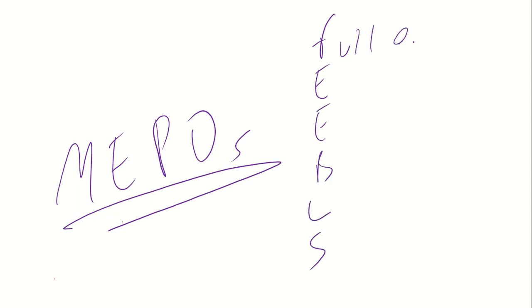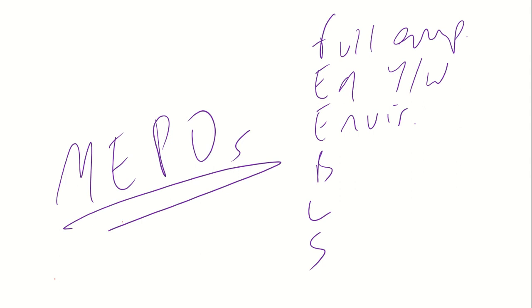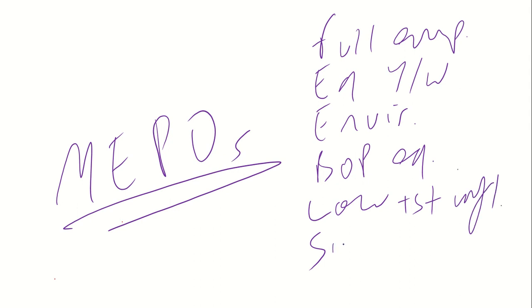We've got FEEBLES as an acronym: Full employment, Equal distribution of income and wealth, Environment concerns, Balance of payments equilibrium, Low and stable inflation, and Sustainable economic growth. The ones I'm going to get through today are unemployment, balance of payments, inflation, and sustainable economic growth. So let's go with economic growth.